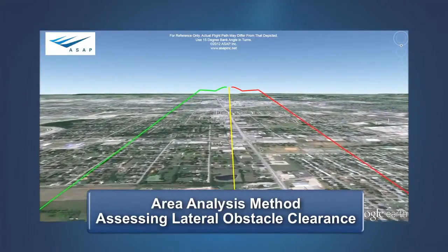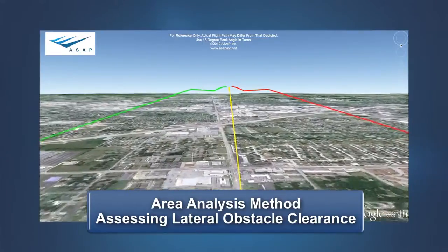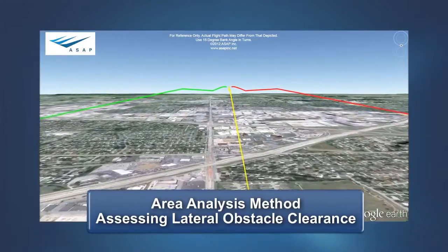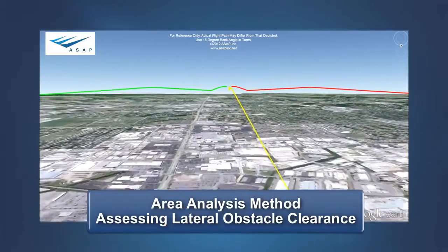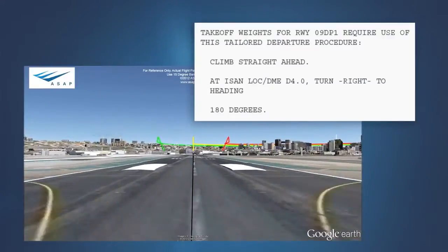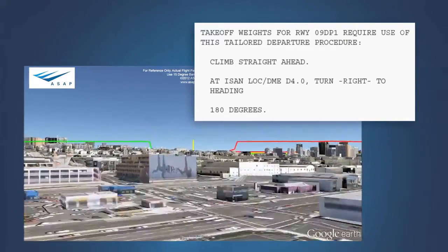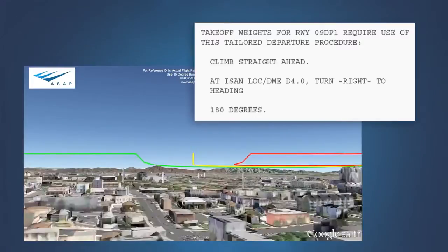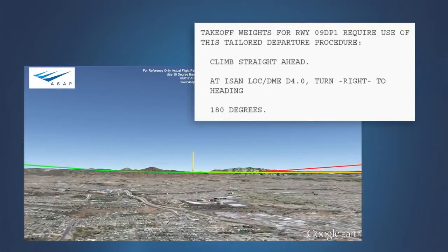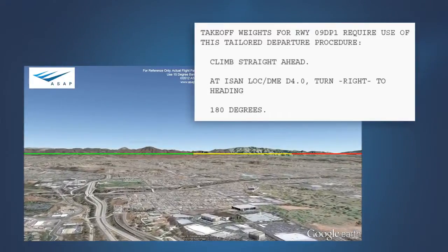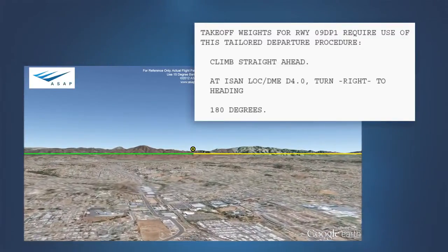The AC provides methods that account for factors affecting the actual ground track relative to the intended ground track, such as wind and available course guidance. This is accomplished by using an obstacle accountability area within which all obstacles must be cleared vertically by the net takeoff flight path. For an engine failure procedure centered on the extended runway centerline, this area begins at the runway end and expands at a predefined rate until it is at a maximum width of 2,000 feet either side of the intended track. For some runways, a special engine failure procedure may be provided that takes the flight path away from the terrain or obstacles that limit the allowable takeoff weight, and the obstacle accountability area expands to 3,000 feet either side of the track when a turn is involved.